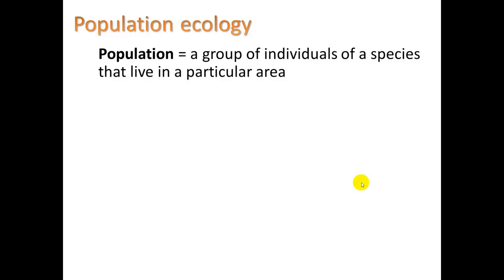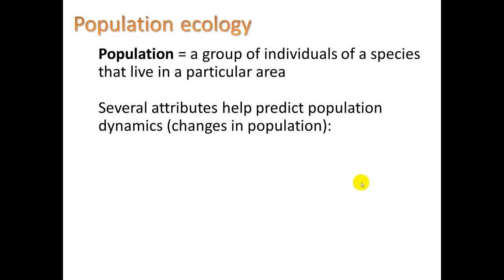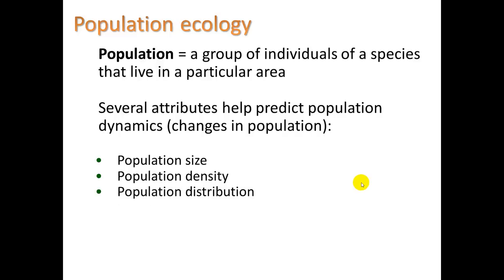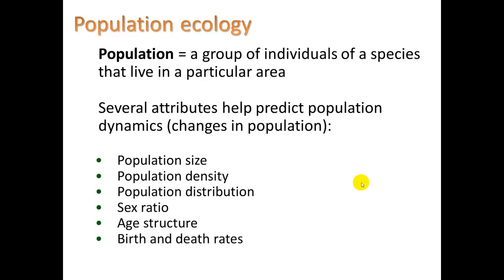Population means a group of individuals of a species that live in a particular area. Several attributes help predict population dynamics or changes in population: population size, population density, population distribution, sex ratio (male to female), age structure, and birth and death rates. We're going to take a look at each of these.